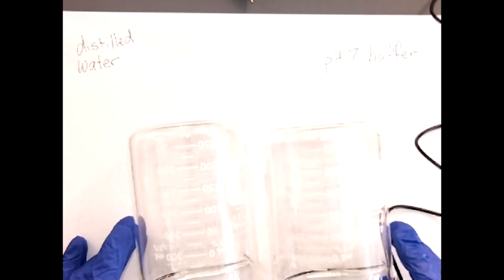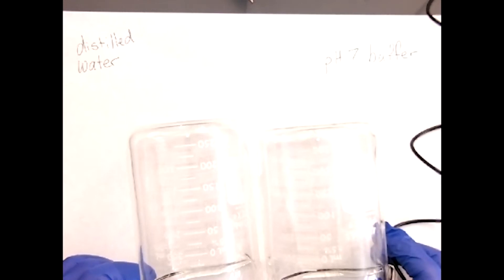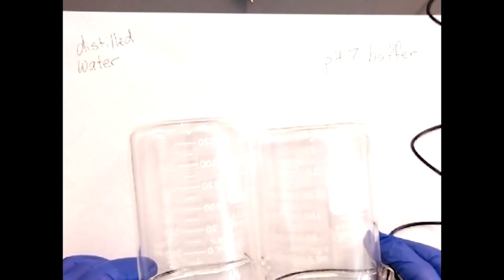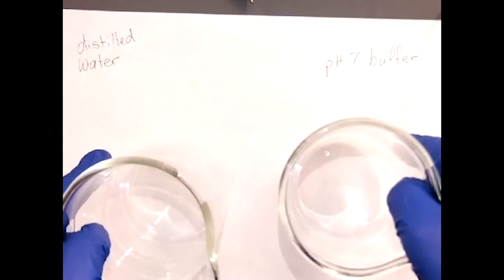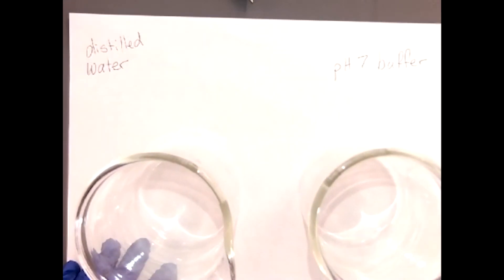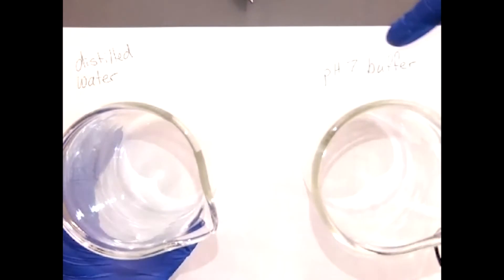We are starting on step three: investigate the effect of a buffer on pH as follows. Place 25 milliliters of distilled water, which has a pH of 7, and buffer solution, which also has a pH of 7, in separate labeled beakers. Here we have our two beakers, and I'm labeling them by just putting them on the sheet of paper with the writing.